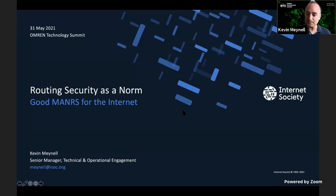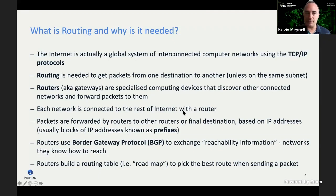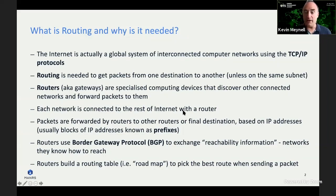Kevin wants to talk about routing security as a norm and why it's important for research and education networks. As a short overview: the internet is a global system of interconnected computer networks using TCP/IP protocols. Routing is what's needed to get packets from one destination to another, using specialized computing devices known as routers that discover other connected networks and forward packets across the internet.